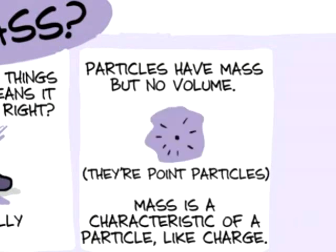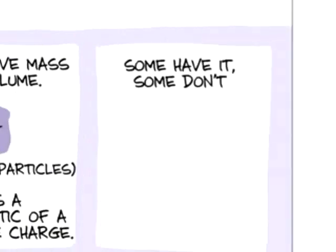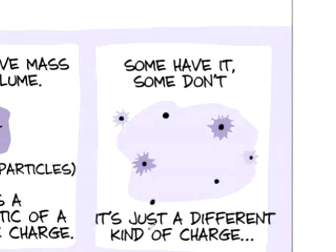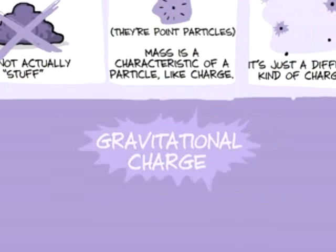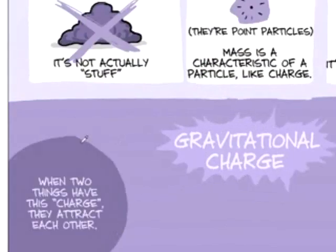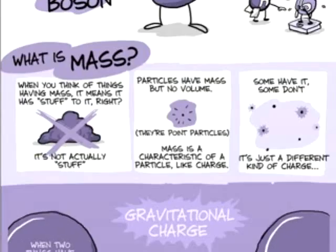It turns out mass is probably just a characteristic of a particle the way like charge is. Like some particles have charge like electrons. Some particles don't. It's just a different kind of charge. So you can think of mass as sort of gravitational charge. And when two things both have mass, they attract each other. Interestingly, you can't have negative mass or repulsive gravity. So gravity is different from other forces that way.